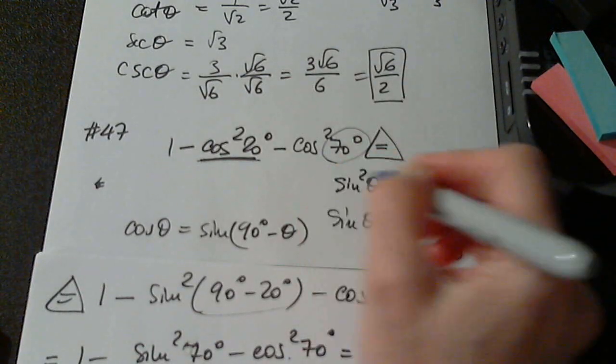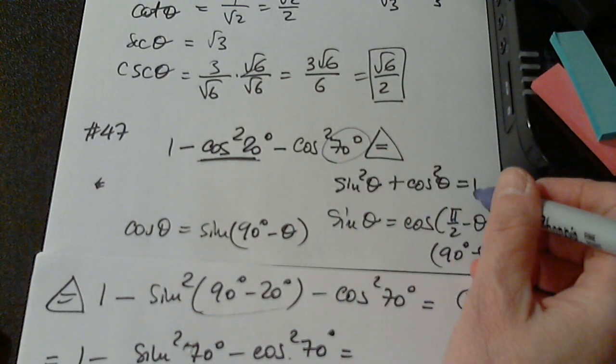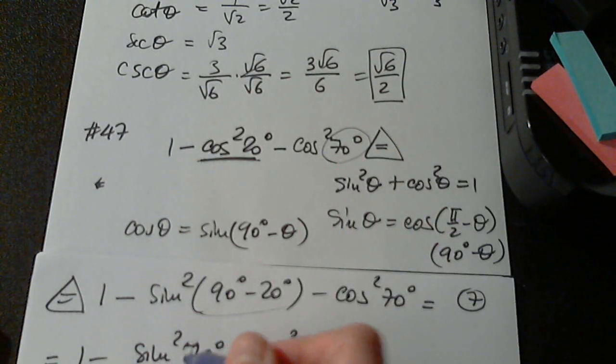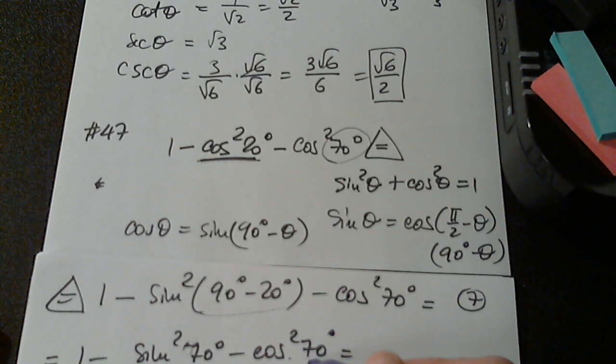You simply multiply both sides, negative, negative, negative. So negative sine squared 70 degrees minus cosine squared of 70 degrees equals negative 1. How much is 1 minus 1? 1 minus 1 is zero. Yeah, that's it. Indeed.